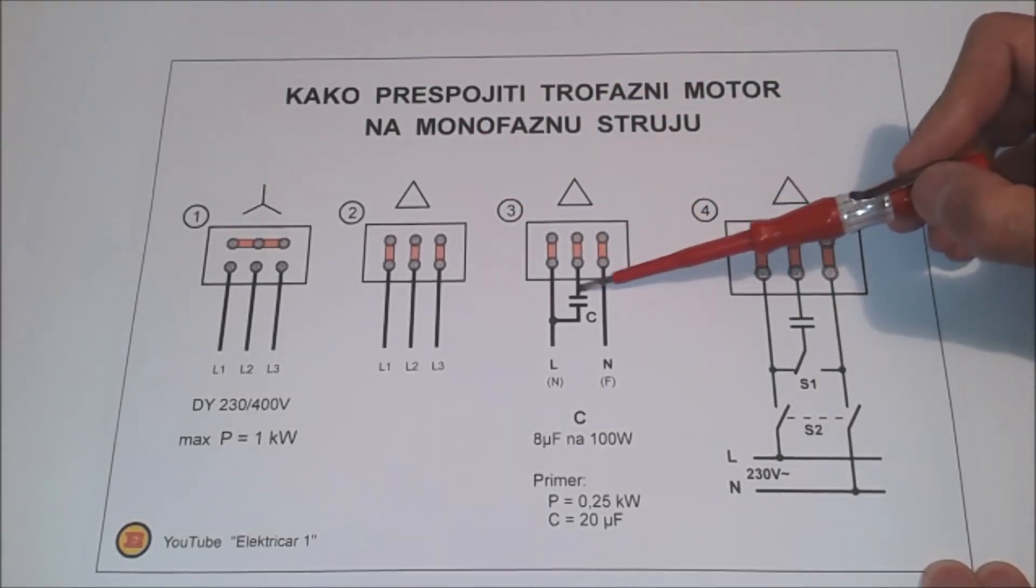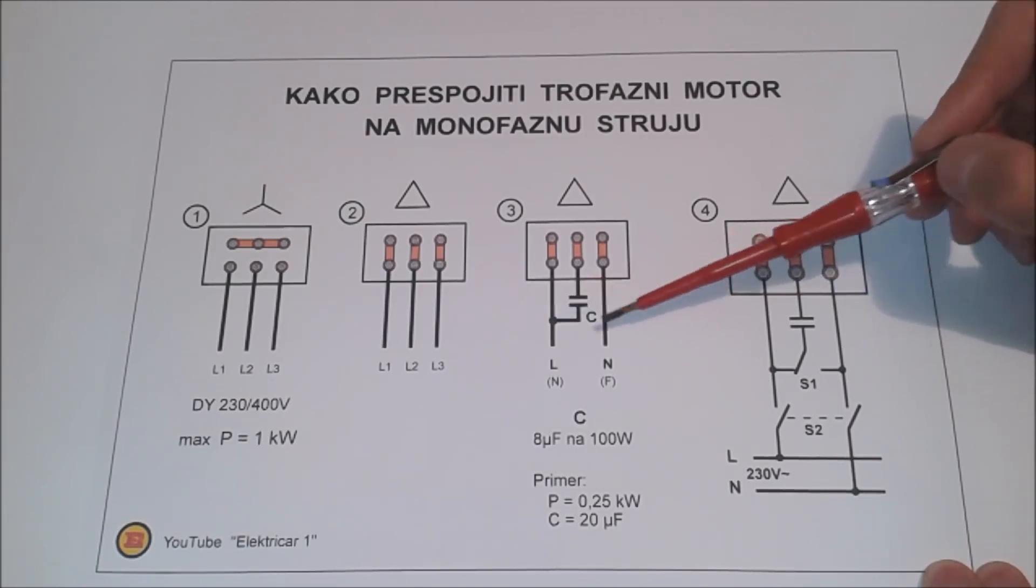After that we cut the phase in the middle and we insert the capacitor instead of it. The capacitor is connected to one of the remaining two phases, therefore the first of the third one.